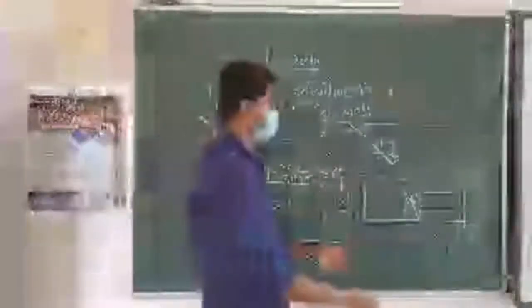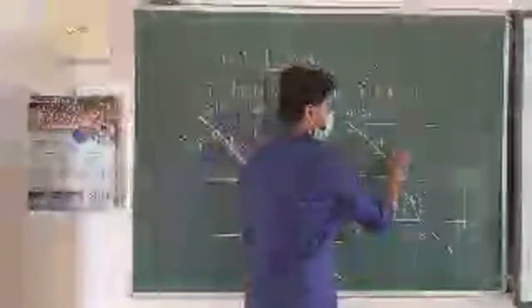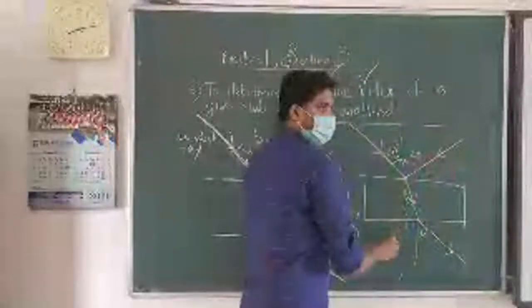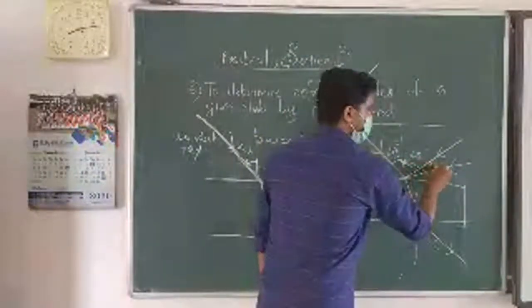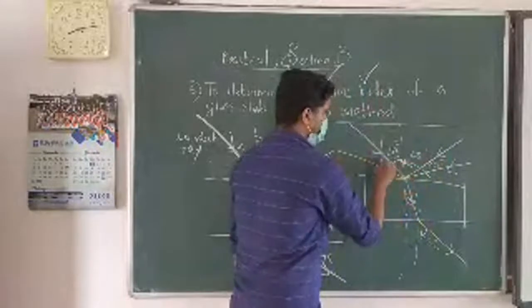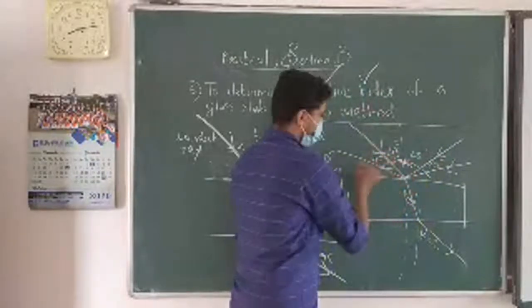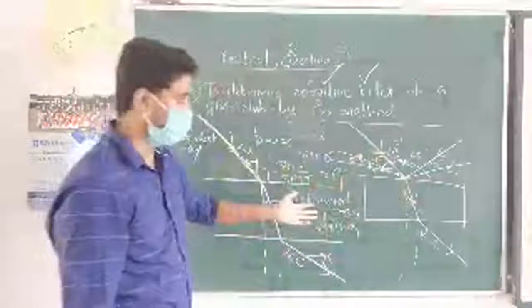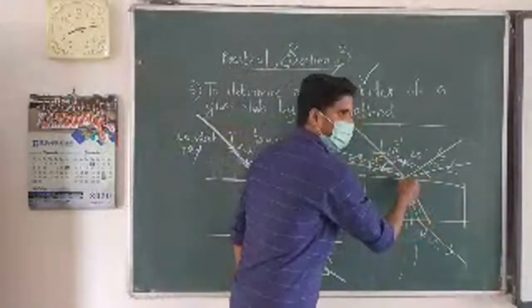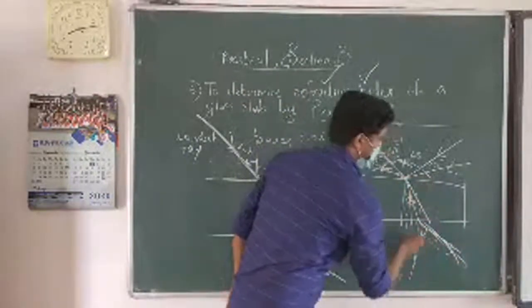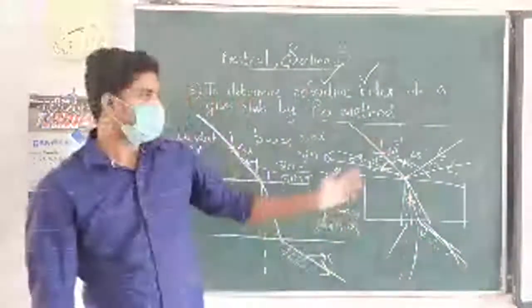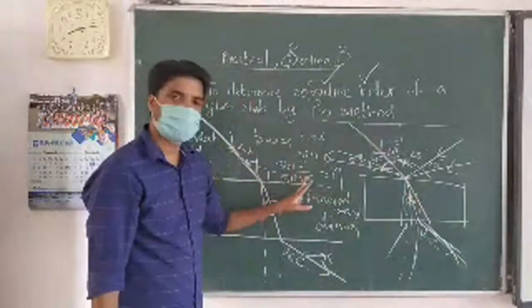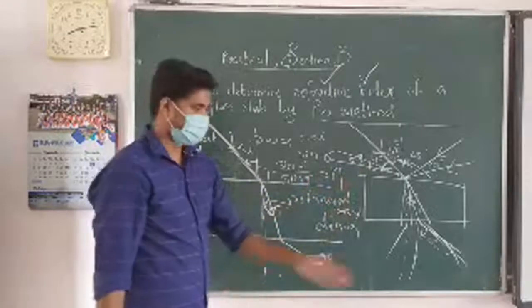Five or six steps means: first angle of incidence take as 20 degrees, next one 25 degrees, third one 30 degrees, fourth one 40 degrees, fifth one 50 degrees — like that, in one paper itself you can mark different incident angles and find out the refracted angle for each. You will get different sine I values and corresponding sine R values.